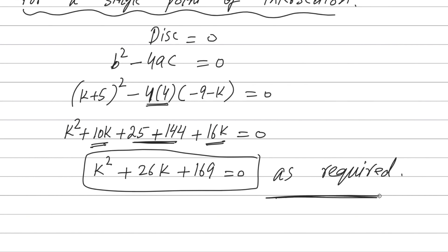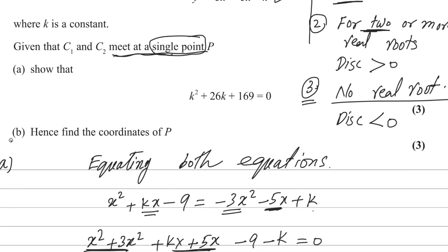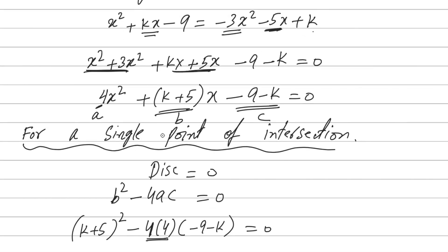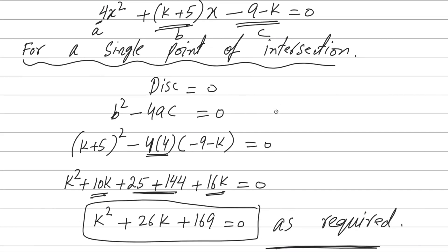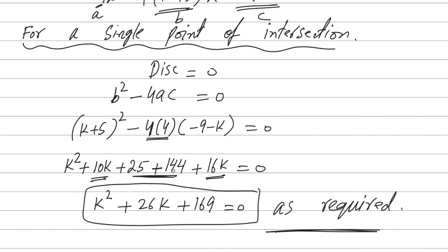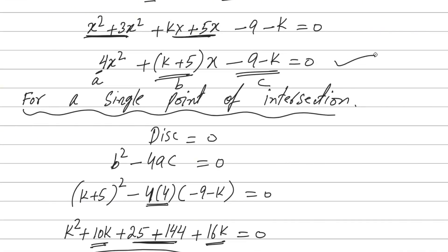The first part of the question is done. For the next part, we need to find the coordinates of P. This equation will give the answer. First get the value of k from this equation, then plug it back into the quadratic to get x. After that, substitute the value of x into one of the original curve equations — either C1 or C2 — to get the corresponding y coordinate.